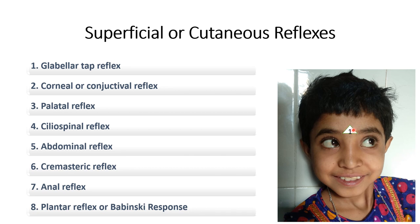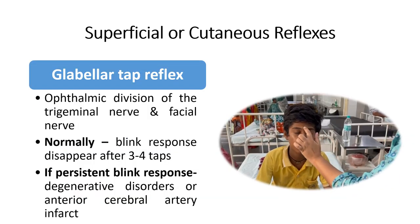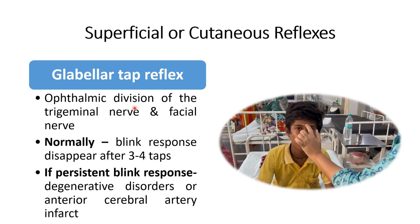First, we will assess the glabellar tap reflex, then corneal or conjunctival reflex, then palatal and pharyngeal reflex, then cilio-spinal reflex, then abdominal reflex, and after that cremasteric and anal reflex, and finally the plantar reflex. The nerve supply for the glabellar tap reflex is the ophthalmic division of the trigeminal nerve as afferent and the facial nerve as efferent.